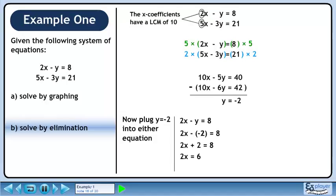Bring the two over to the right side, giving 2x equals 6. Divide both sides by 2 to get x equals 3.